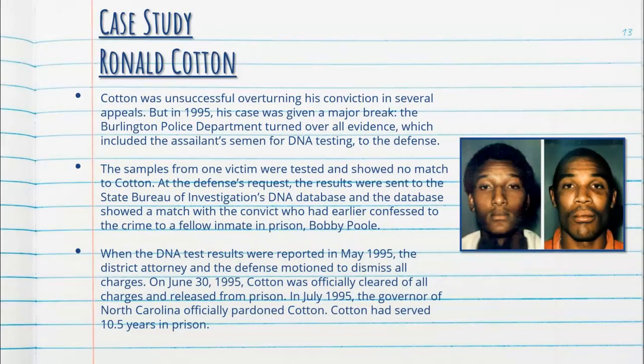Cotton was unsuccessful in overturning his conviction through several appeals, but in 1995 his case received a major break due to the development of DNA testing. The Burlington Police Department turned over all evidence, including the assailant's semen, for DNA testing. Samples from one victim showed no match to Cotton. At the defence's request, results were sent to the State Bureau of Investigations DNA database, which showed a match with convict Bobby Poole, who had confessed to the crime to a fellow inmate. In May 1995, the district attorney and defence motioned to dismiss all charges. On June 30, 1995, Cotton was officially cleared and released from prison, and in July 1995 the governor of North Carolina officially pardoned him after he had served 10 and a half years.